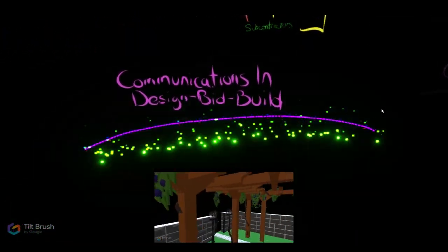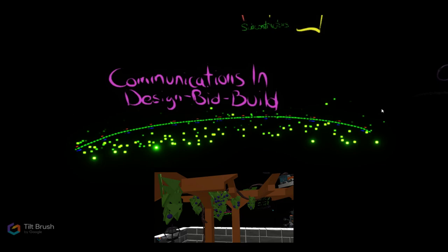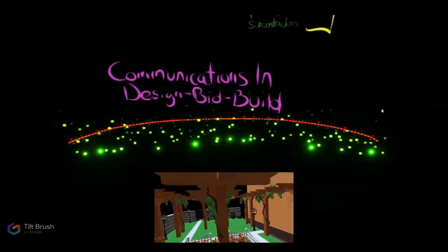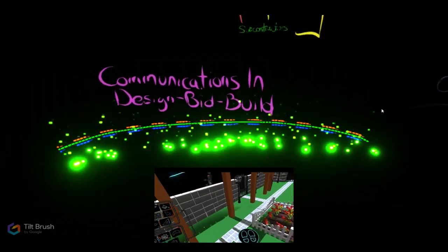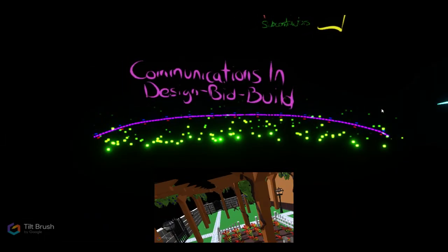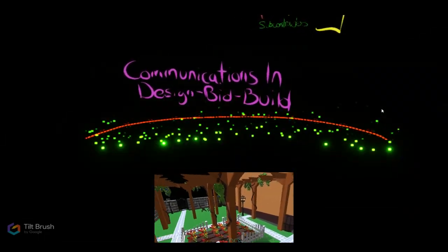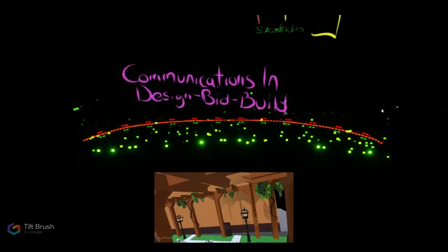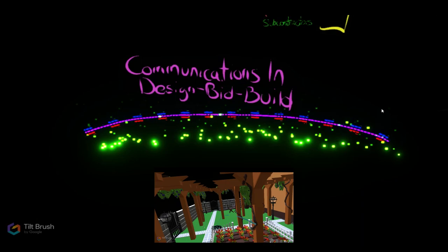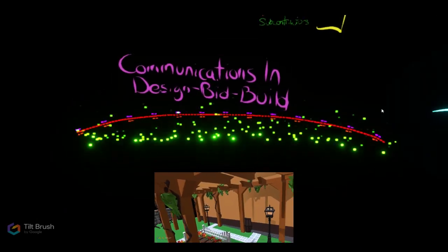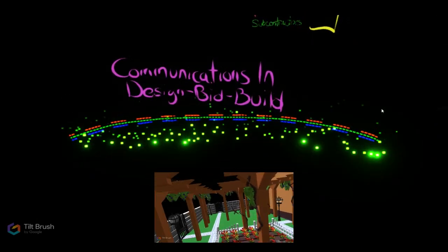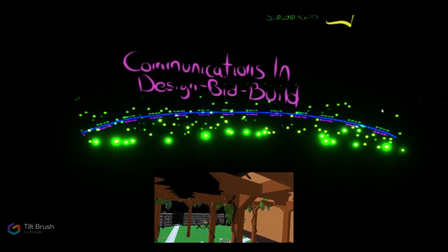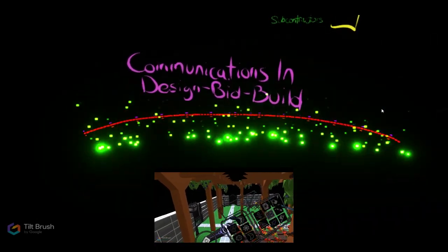During the construction phase, special care must be taken to avoid communications that transcend the contractual lines of privity. Subcontractors should not communicate directly with the architect but should approach the contractor's superintendent or project manager. Most problems on the job site have a larger impact than just the particular subcontractor's work, and the superintendent or project manager has the responsibility and perspective to discern the full impact of the change or concern.